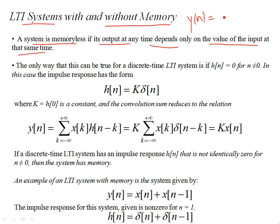For example, if my system y[n] is a discrete-time system and the relationship between input and output is that it's just squaring the present sample x[n] — the sample at the present time index n — this is a memoryless system because the output is not dependent on n-1 or n+1. It computes the output using the present sample at the same instant n, and does not require any previous or future inputs.